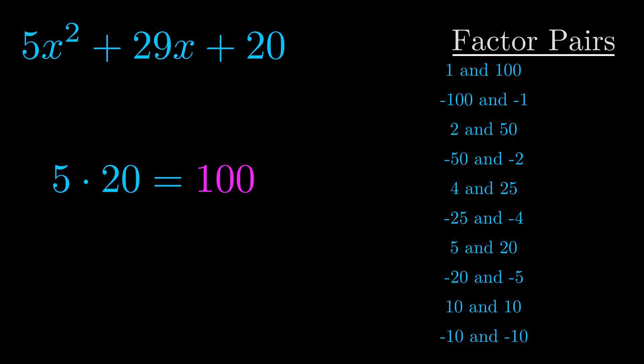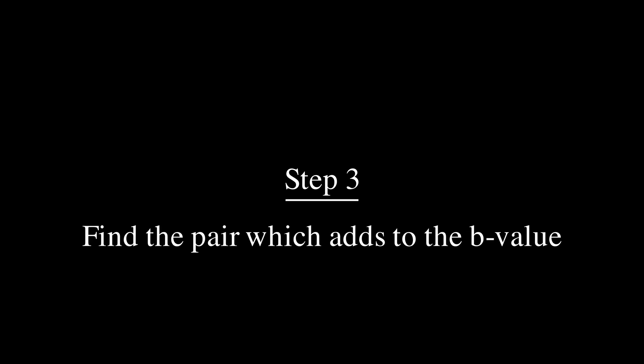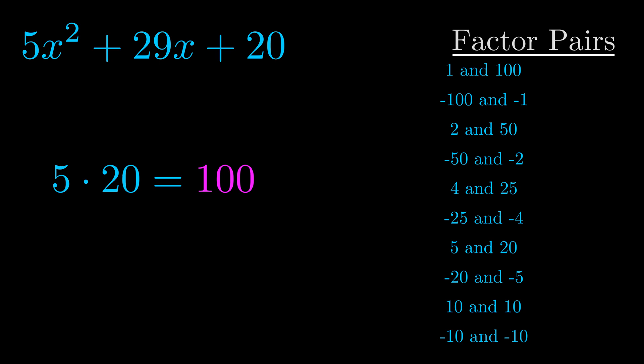Now once you have these factor pairs, the goal is to find which of these pairs adds to the b value. The b value is the coefficient on the x term. That's the middle term, the one that we haven't done anything with yet.